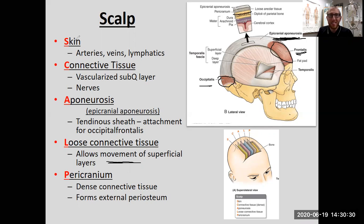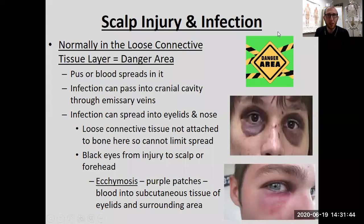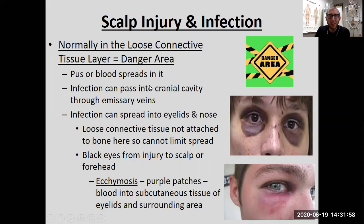Luckily, 'scalp' has an acronym that tells you the five layers in order from superficial to deep. Be able to reverse the order and go deep to superficial as well. Now, what can go wrong with the scalp? Mainly it's infection — typically in the loose connective tissue layer, referred to as a danger area. You get pus or blood that spreads, and the infection can show itself as a symptom like a black eye, but uniform on both sides with discoloration or purple patches.